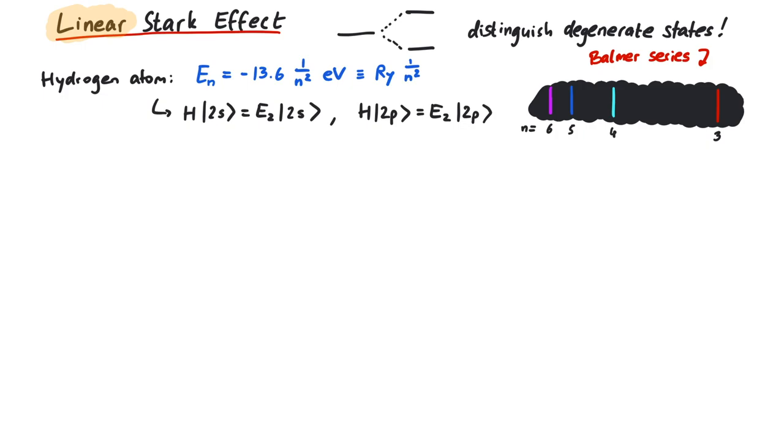In order to do calculations in quantum mechanics, we use our favorite toolkit, perturbation theory. To use perturbation theory, we must first think about the potential that will perturb our Hamiltonian. An electric field will push the electron in the hydrogen atom in one way, and the nucleus in the other way.